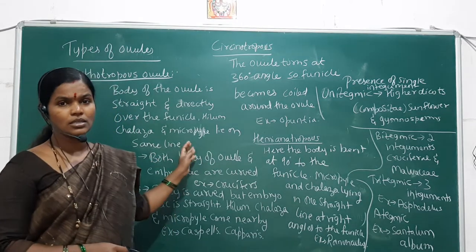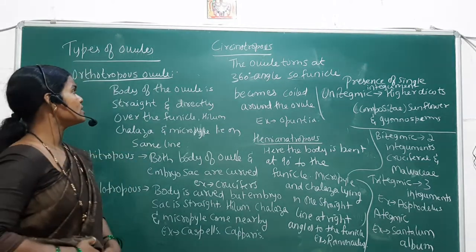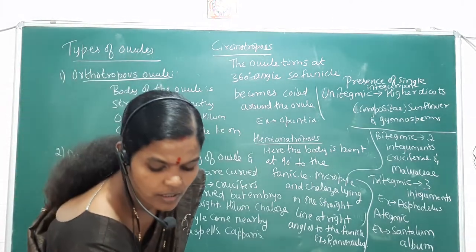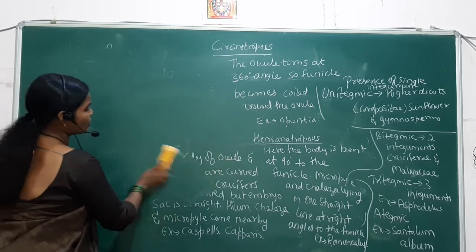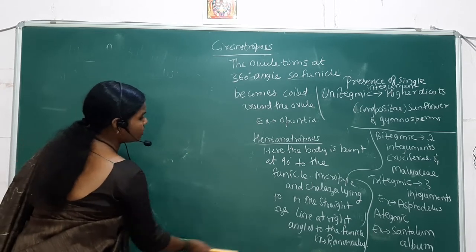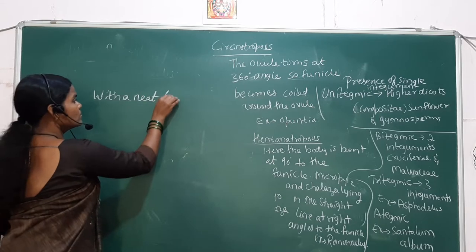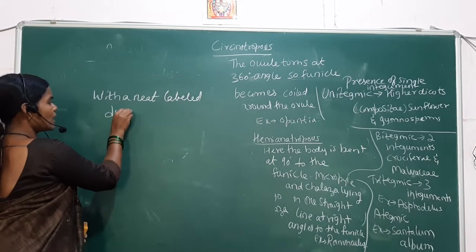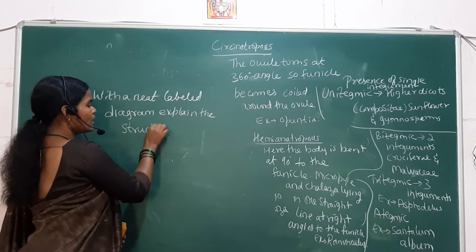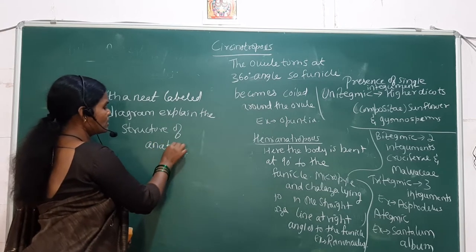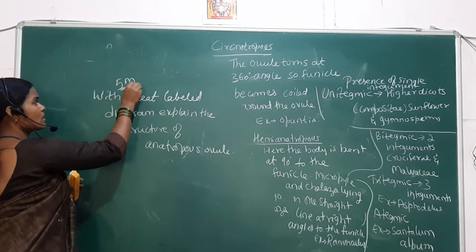Now some assignment questions: With a neat labeled diagram, explain the structure of the anatropous ovule — this is very important for five marks. You have to draw the structure and write the points discussed in class.